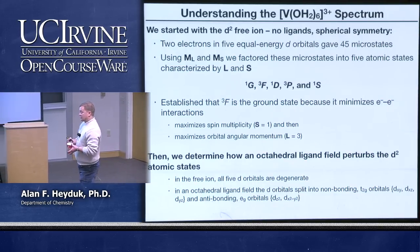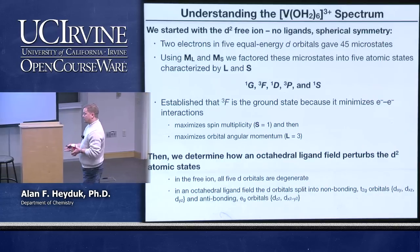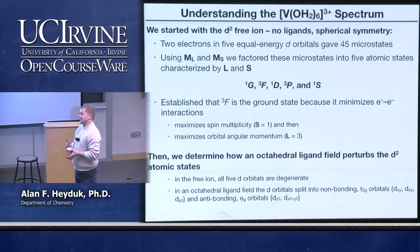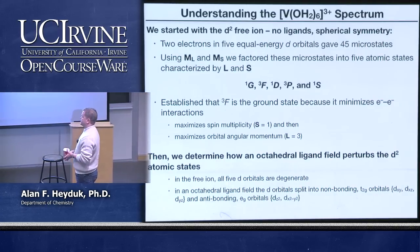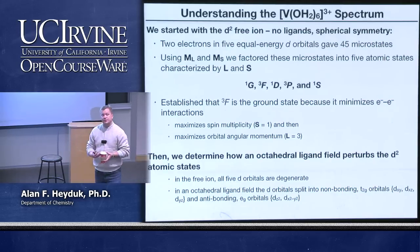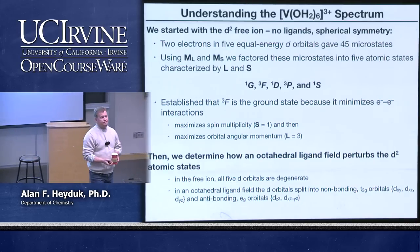They're spin-allowed transitions. They're Laporte forbidden or orbitally forbidden, so we know that they're D-to-D transitions. From our molecular orbital diagram, you can't explain where the three transitions come from, and so we've been employing crystal field theory.